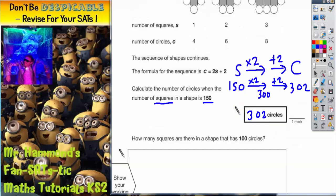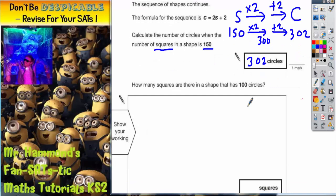Now if we get a different color and scroll down for the next bit, it then says how many squares are there in a shape that has 100 circles.